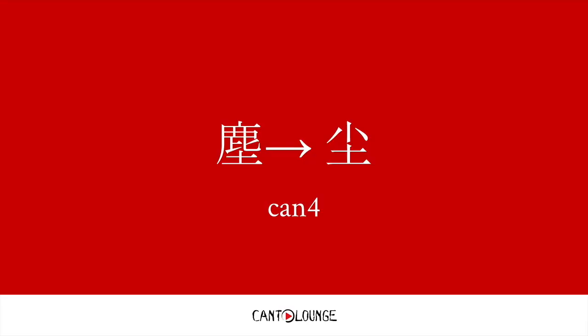And then in a similar way, 塵, which means dust, is simplified to this character here. This bit can be read as 小, and this bit as 土. I think they read it as 小土为尘 — so little soil, small soil, finely grained soil, is dust — which makes sense.